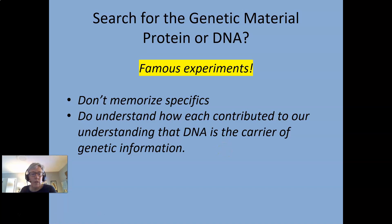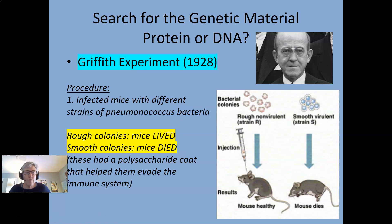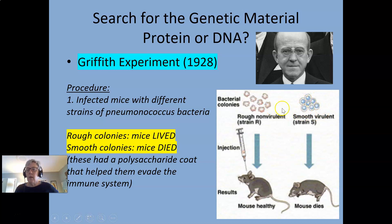You don't have to memorize all the details, but you do need to understand what each experiment contributed to our understanding. The first one was 1928 — this is the Griffith experiment. What he did was he took two different strains of pneumococcal bacteria. One was called rough because it had a polysaccharide coat on the outside, and the other was called smooth because it did not have that coat. They already knew that the rough strain (strain R), if you infected it into mice, the mice lived just fine. If you infected the smooth strain (strain S) into mice, the mice died. So the S strain is virulent and the R strain is non-virulent.